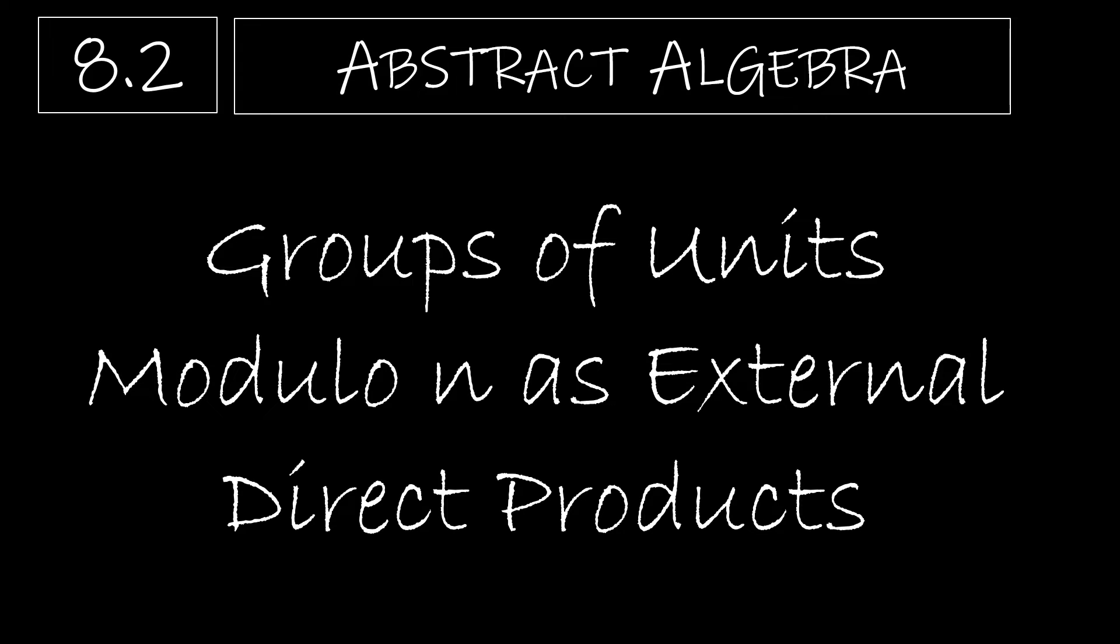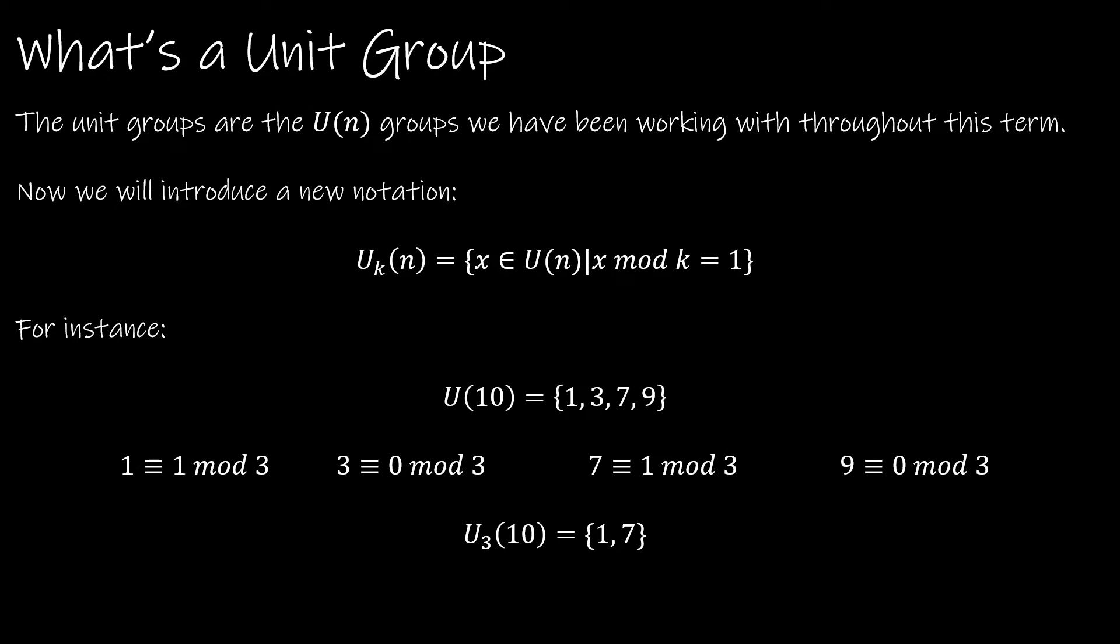Let's take a look now at the rest of Chapter 8. We're going to look at groups of units modulo n as external direct products. So what exactly is a unit group? Well, that's just the U(n) groups that we've been working with throughout the chapter. It's all of the elements that are less than n but relatively prime to n.